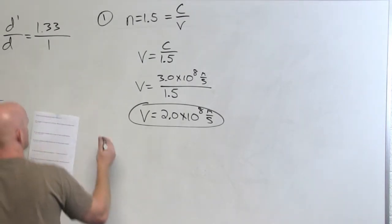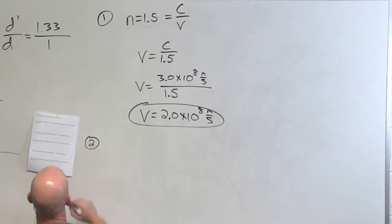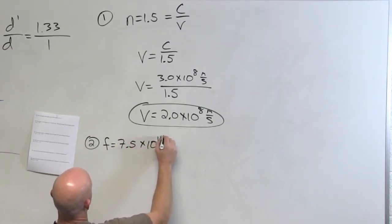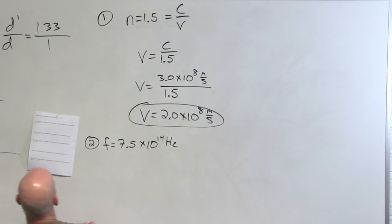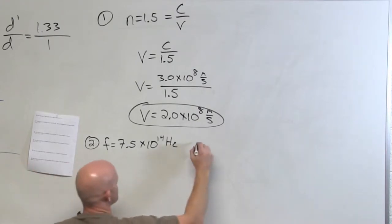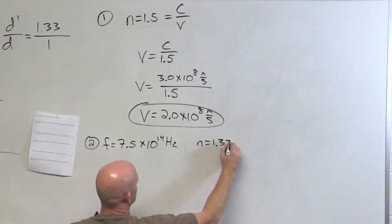So question number two, a little more challenging. The frequency of violet light in air is 7.5 times 10 to the 14th hertz. The question is, what are the frequency and wavelength of this violet light in water? And the index of refraction is provided for us again at 1.33.